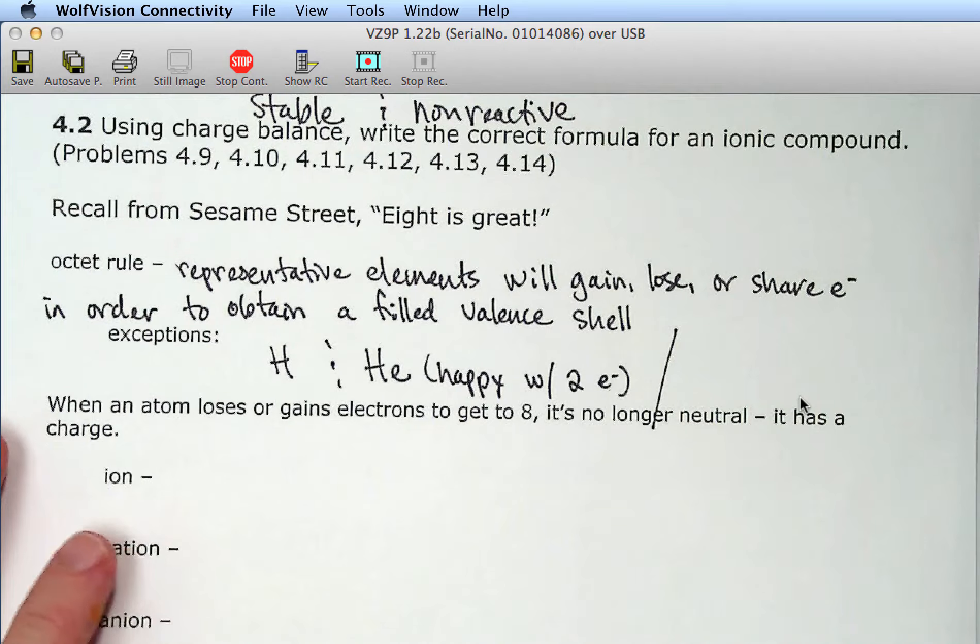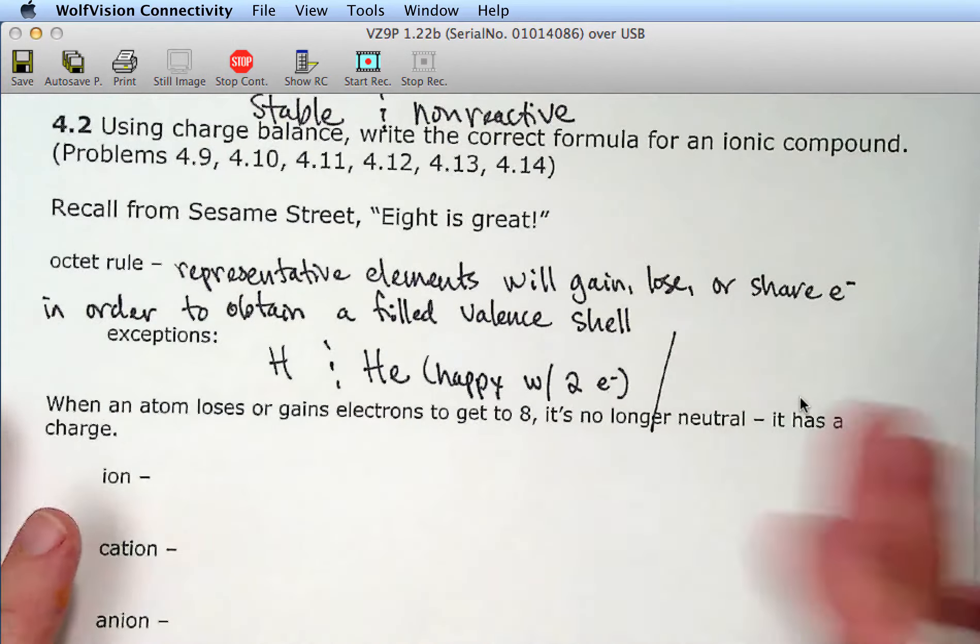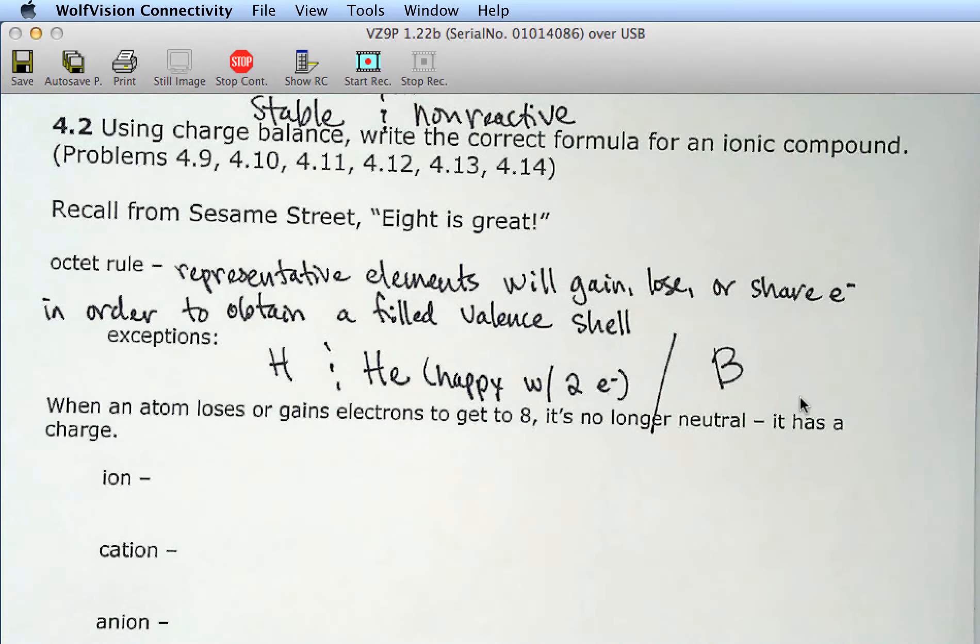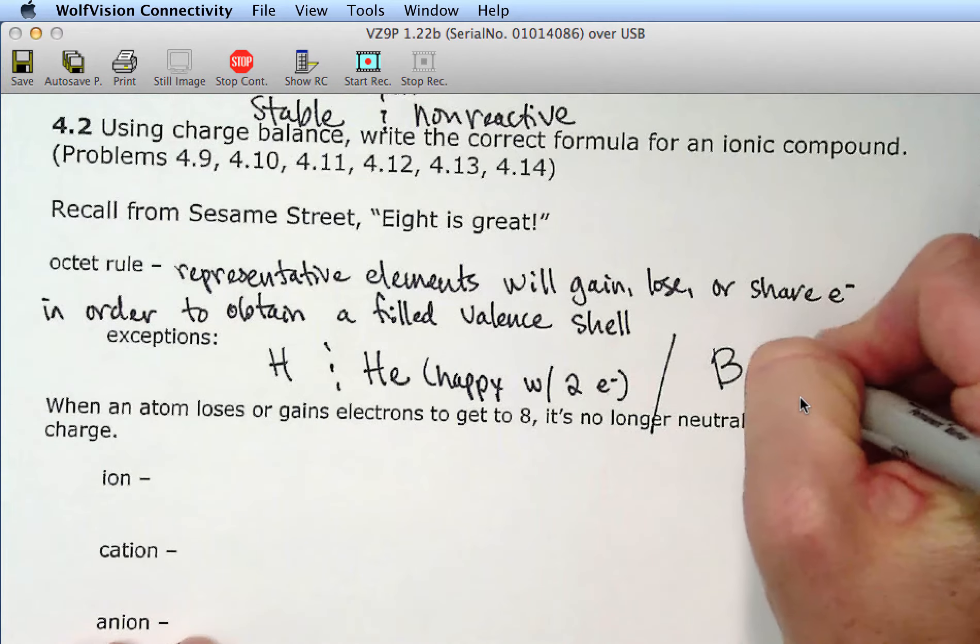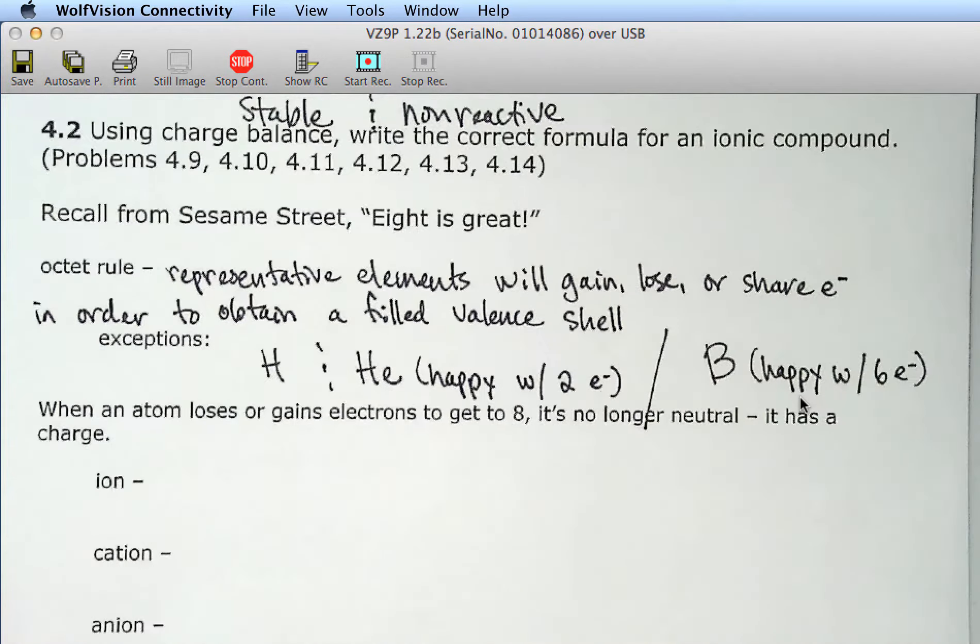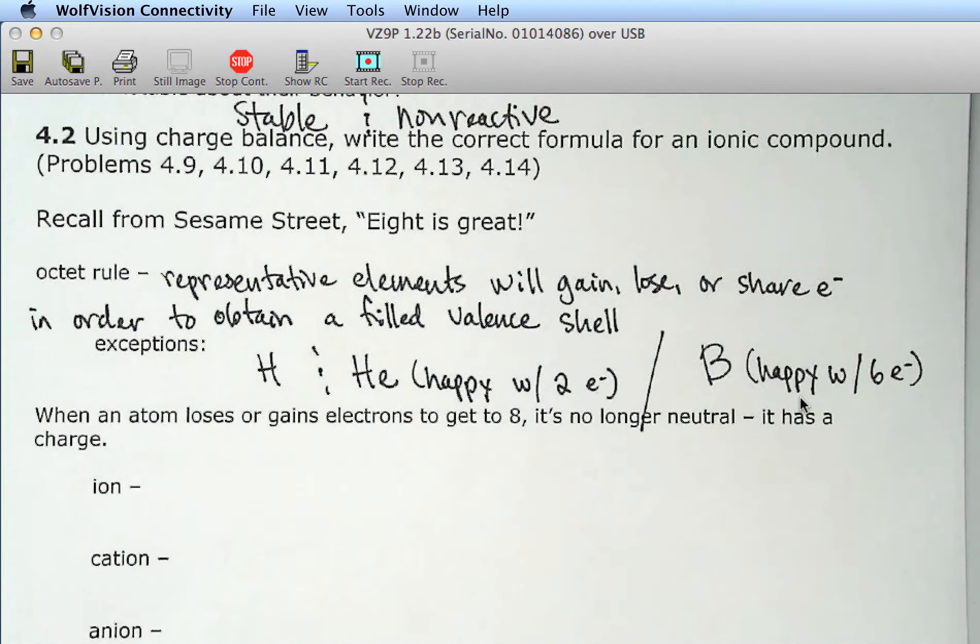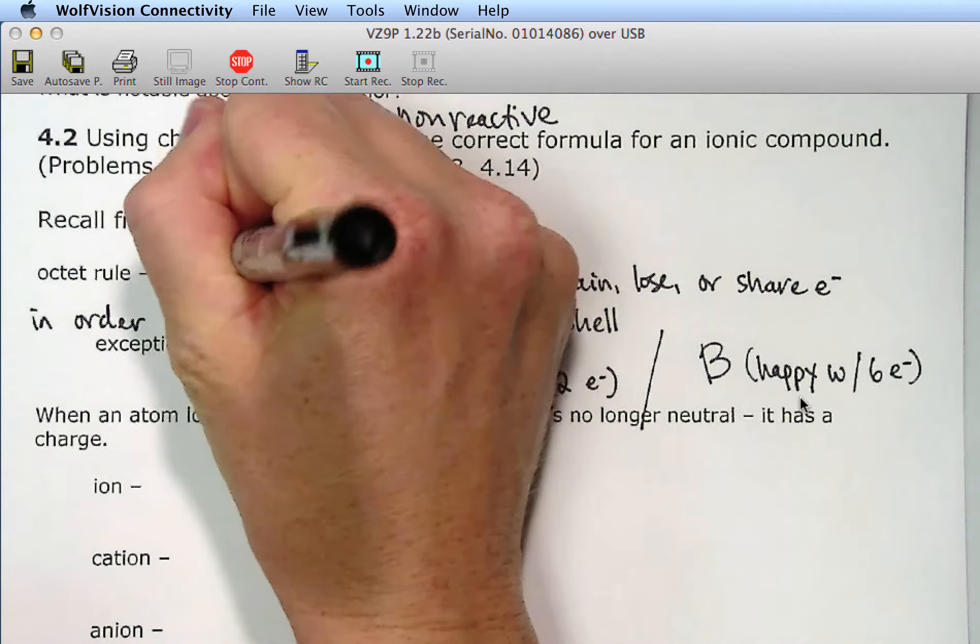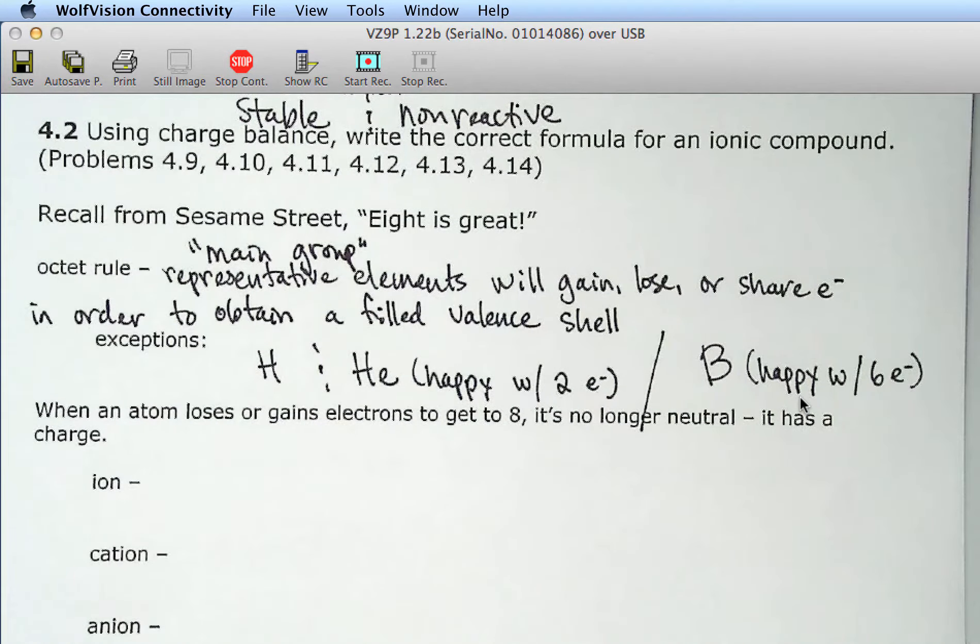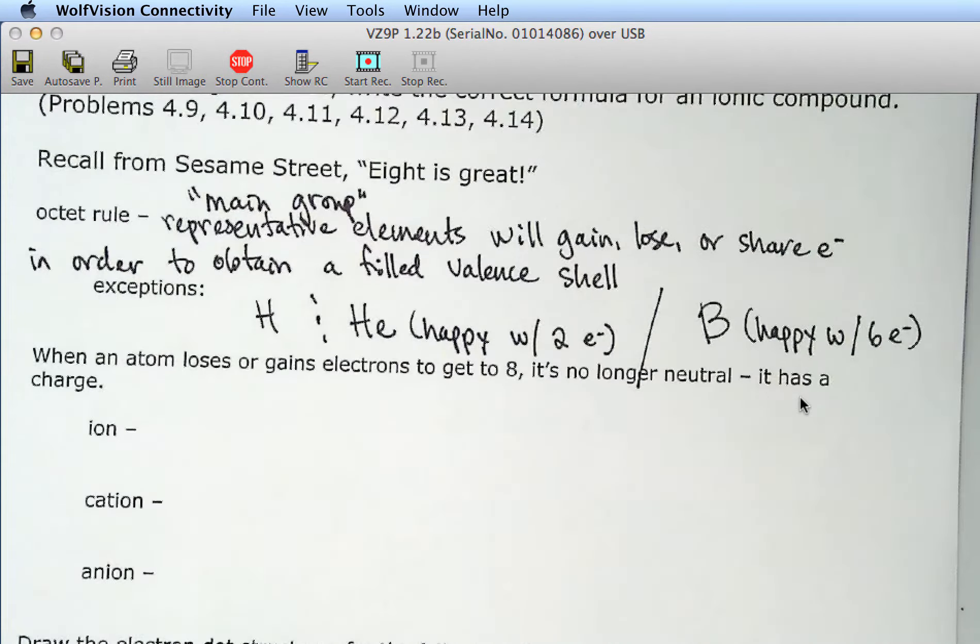There are a few exceptions. Hydrogen and helium. You can think of them as minimalists. They're happy with two electrons. They don't need the whole eight. If you think about it, in the first shell, you can only have two electrons. So, they are happy with two electrons. The other exception that we kind of come across is boron. It's also a minimalist. It's happy with six a lot of the times. So, aside from those exceptions, the representative elements. What's another name for representative elements? The main group. So, main group.